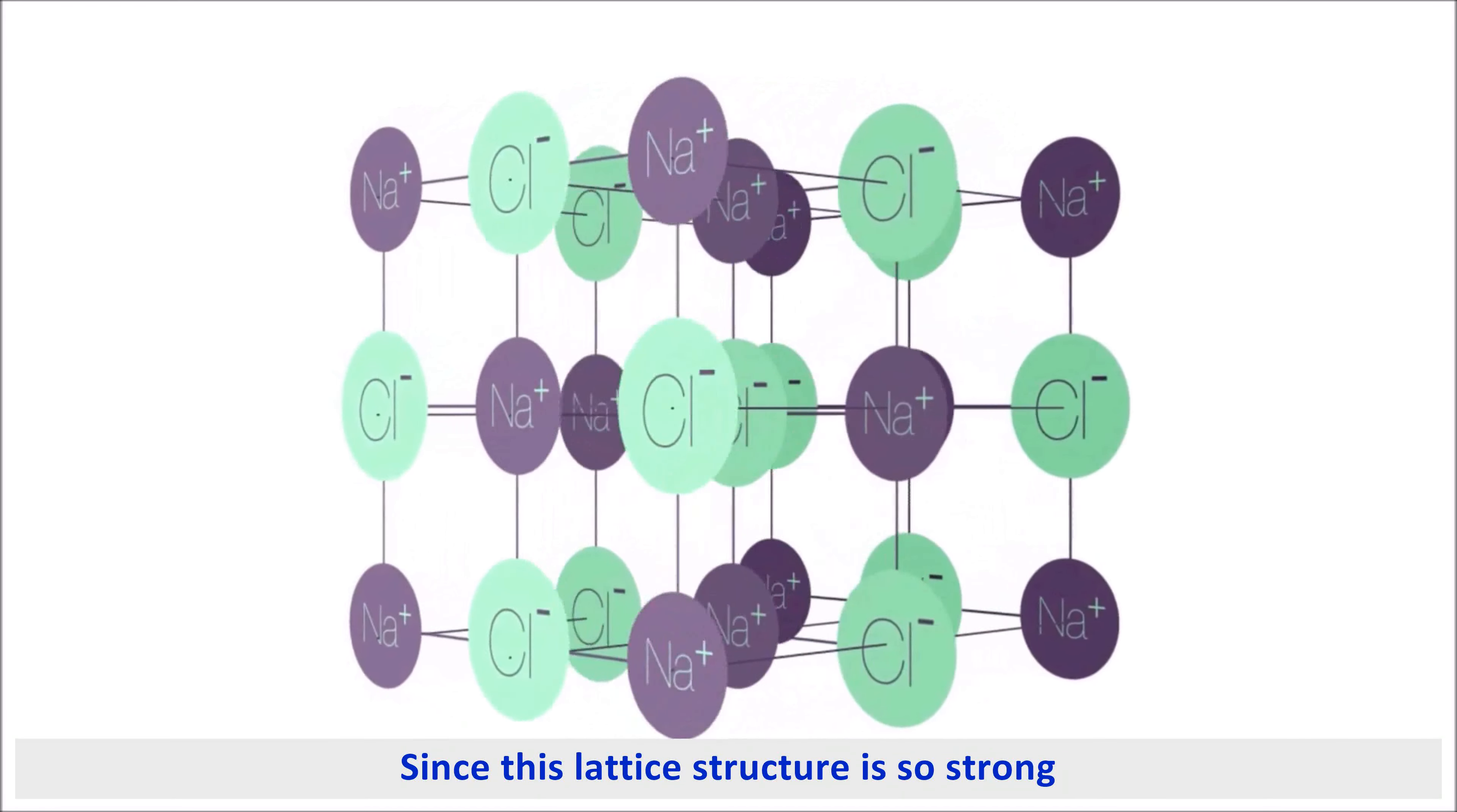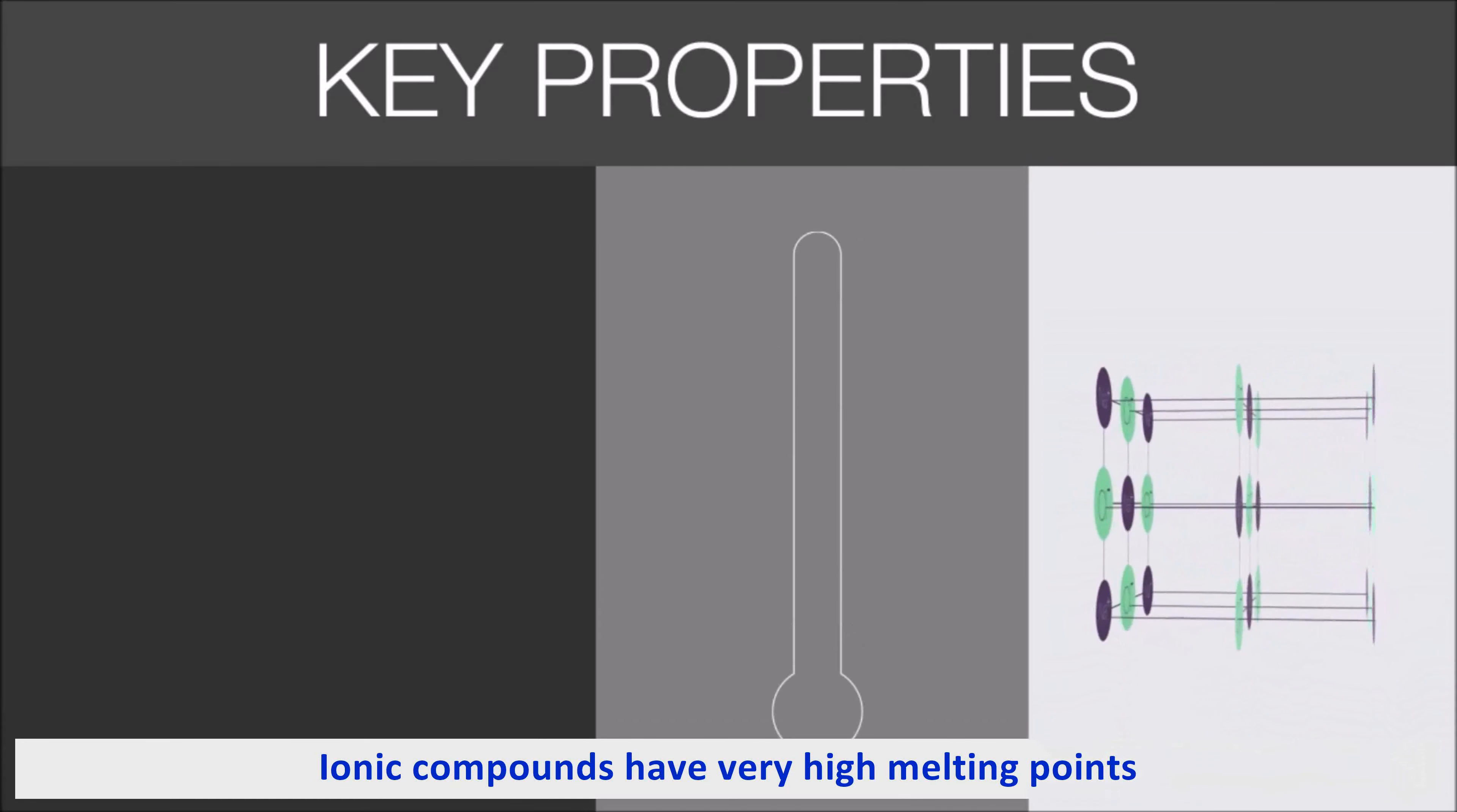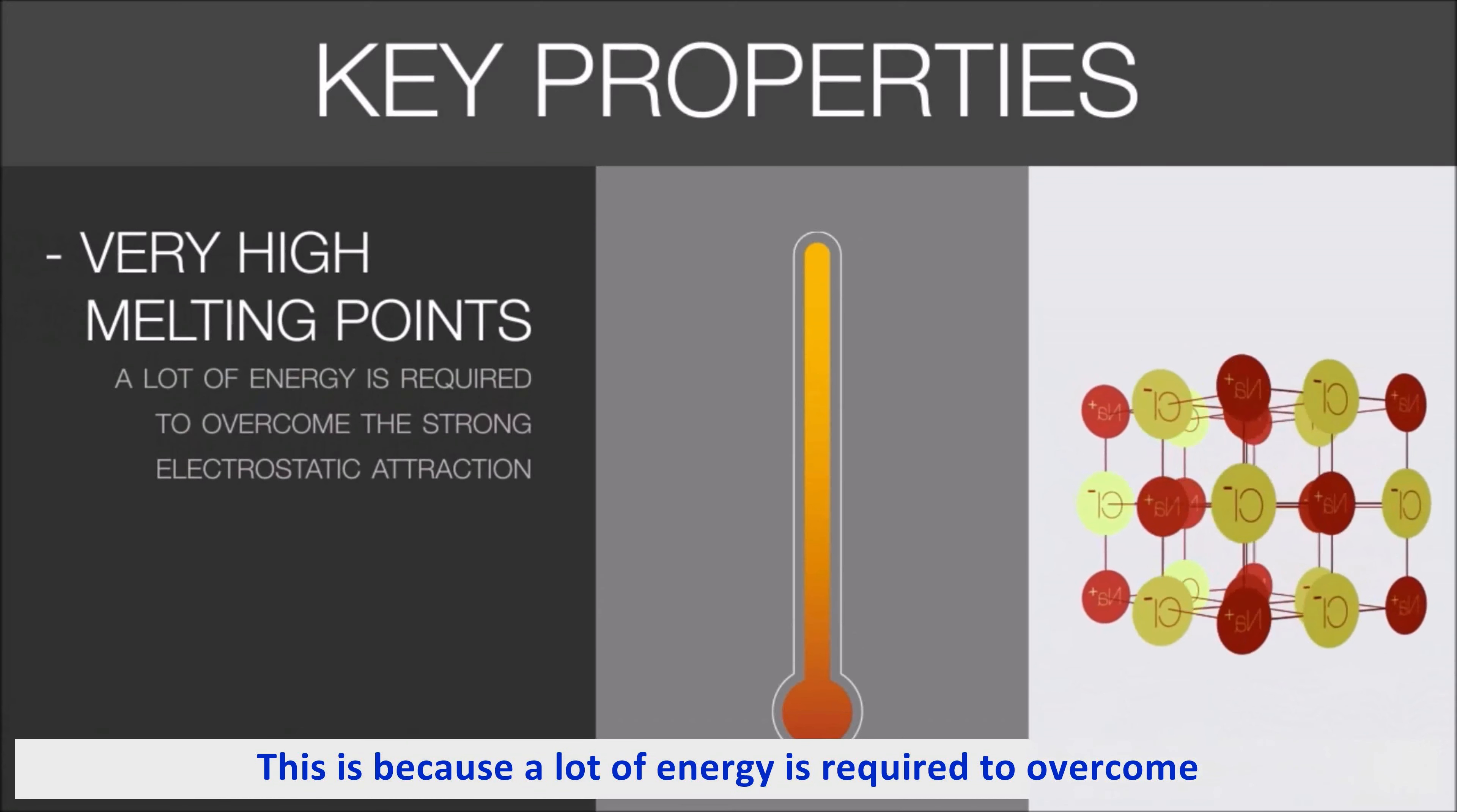Since this lattice structure is so strong, it explains some key properties of ionic compounds. Ionic compounds have very high melting points. This is because a lot of energy is required to overcome the strong electrostatic attractions holding the 3D lattice structure in place.